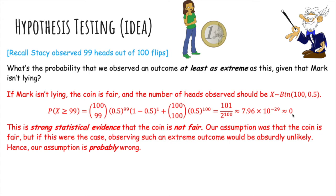So this is strong statistical evidence that the coin is not fair. Our assumption was that the coin is fair. But if this were the case, then observing such an extreme outcome would be absurdly unlikely. So our assumption is probably wrong. And so this is like a probabilistic proof by contradiction.